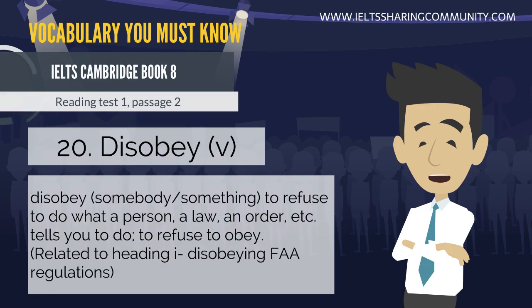20. Disobey — to refuse to do what a person, a law, an order, etc. tells you to do. Synonyms: to refuse to obey.